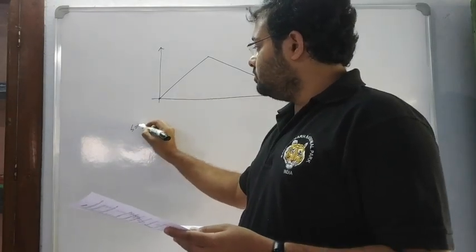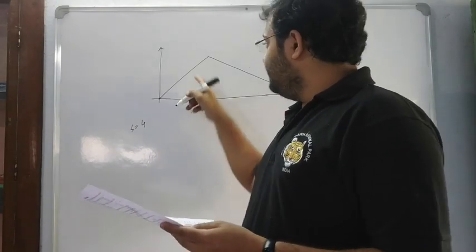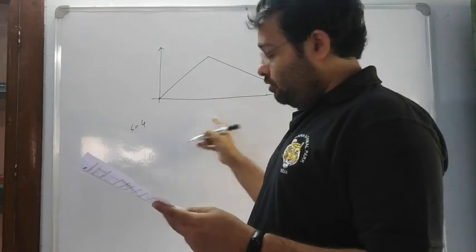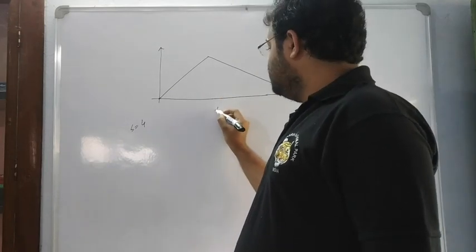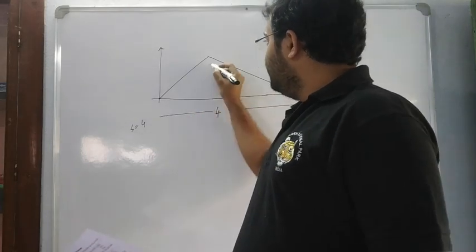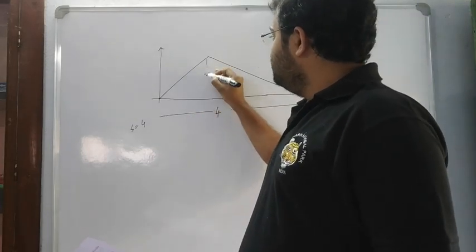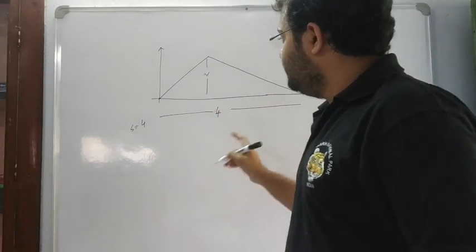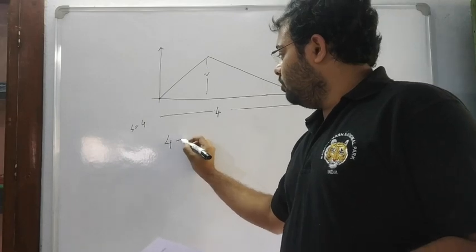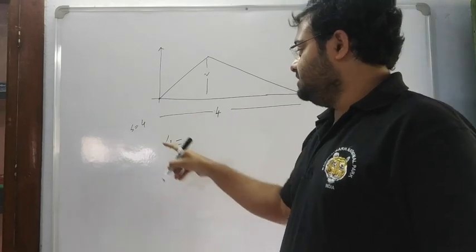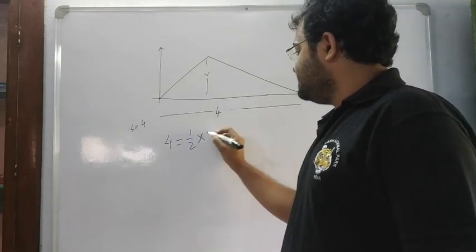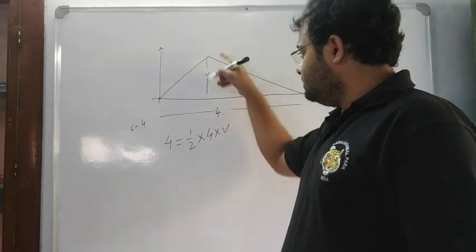Total s is 4. Total time is 4 minutes. S equals 4, and using the area formula: s equals half into base into height.